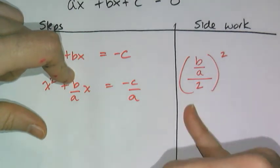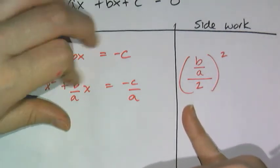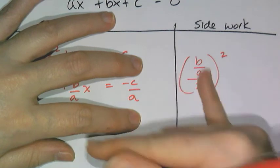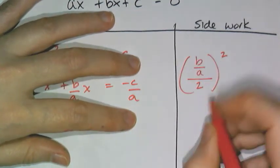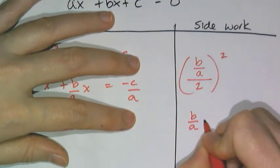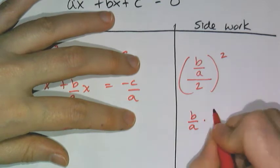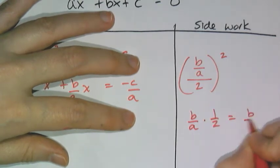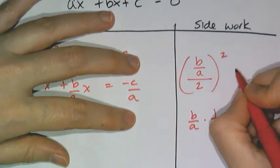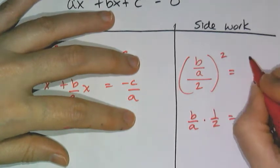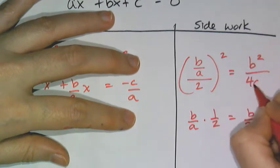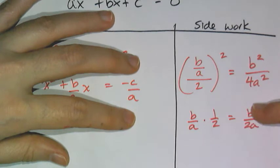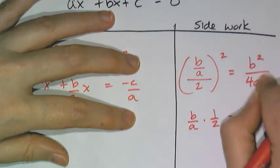But we don't like fractions and fractions. So I'm going to fix what's inside the parentheses. Because b over a divided by 2 is the same thing as b over a times 1 half, which gives me b over 2a. And this quantity squared is going to be b squared over 4a squared, because I square the b, the 2, and the a to simplify that.